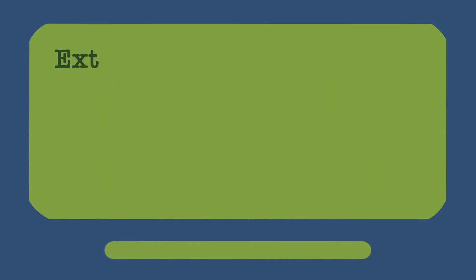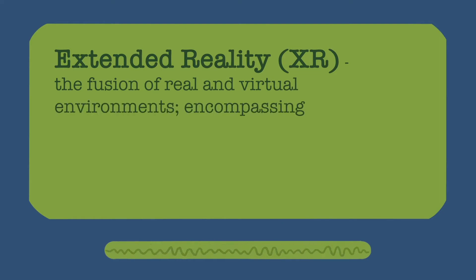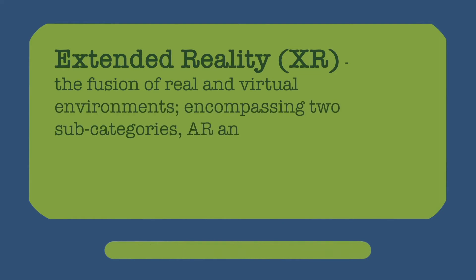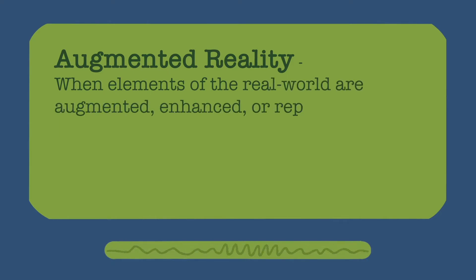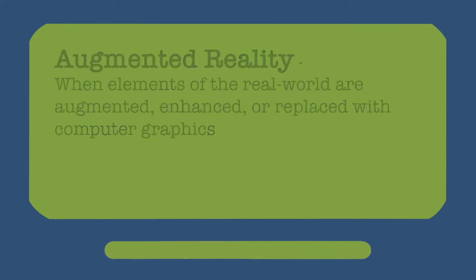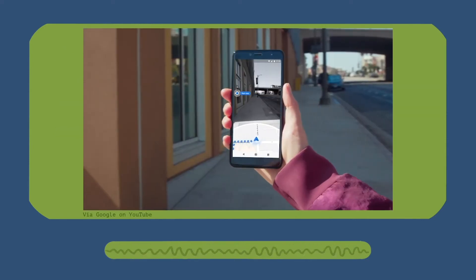First, we should talk about extended reality, also known as XR. XR is an umbrella term used to describe the fusion of real and virtual environments. It encompasses two subcategories: AR and VR. AR, or augmented reality, is when elements of the real world are augmented, enhanced, or replaced with computer graphics.